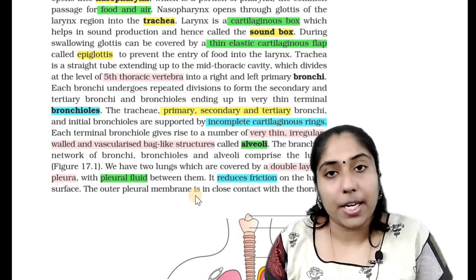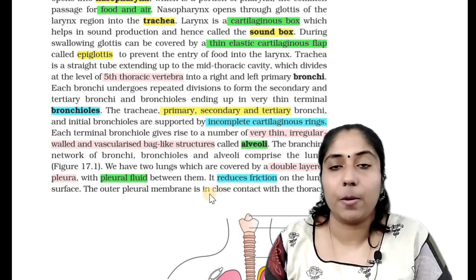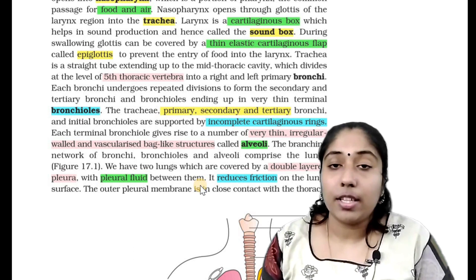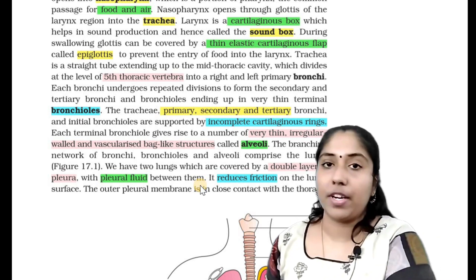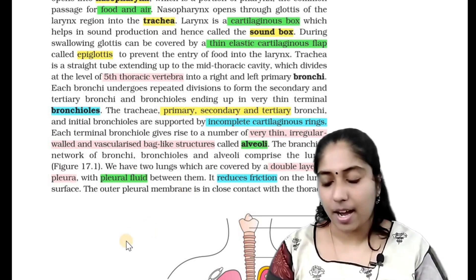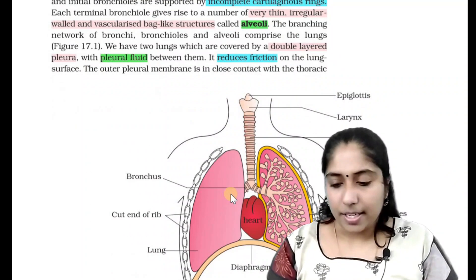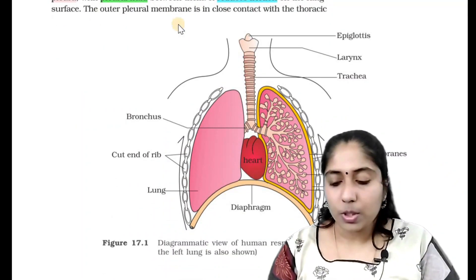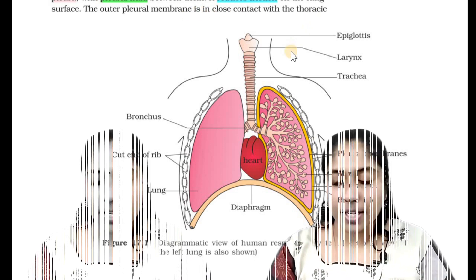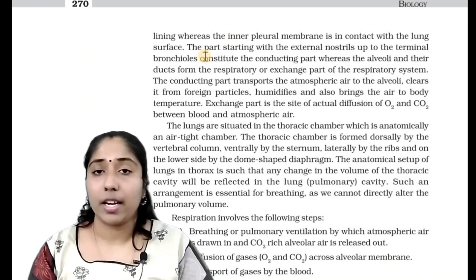This is called the pleura. Pleura are two types: the outer layer and the inner layer. These two layers have a fluid called the pleural fluid. It reduces friction to prevent external injuries. This is the human respiratory system. The outer pleural membrane is in contact with the thoracic cavity, whereas the inner pleural membrane is in contact with the lung surface.